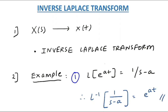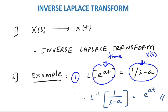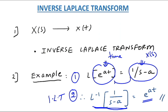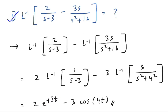We have the time domain function e^(at), and the Laplace of e^(at) is 1/(s−a). Now for the inverse Laplace transform, the given part is the Laplace domain function and the requirement is a time domain function. So the inverse Laplace of 1/(s−a) gives e^(at). Always remember: going from time domain to Laplace domain is the Laplace transform, and going from Laplace domain to time domain is the inverse Laplace transform.